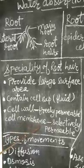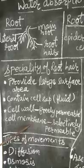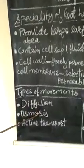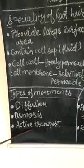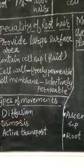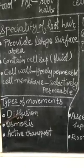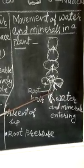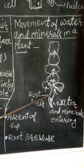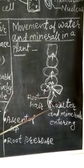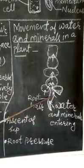Now the type of movements we can see in plants: diffusion, osmosis and active transport. First we will discuss about diffusion. Diffusion is the process which helps the soil water and minerals move into the root hair cell. This process helps the water and minerals to move inside the root hair cell.